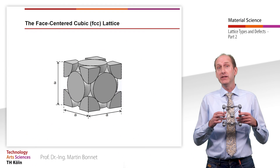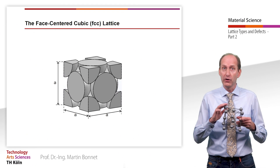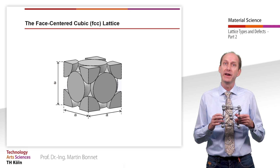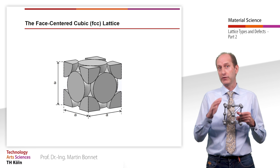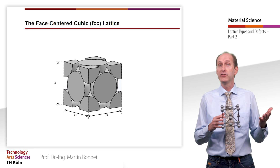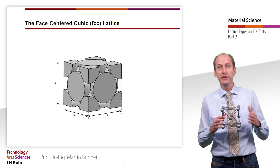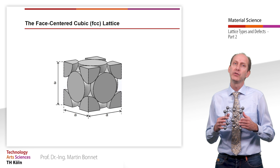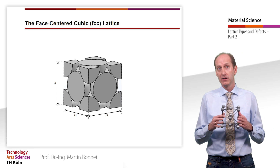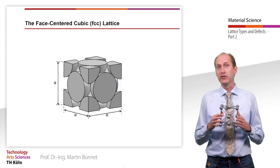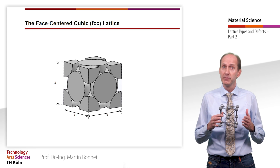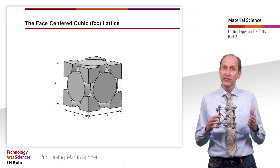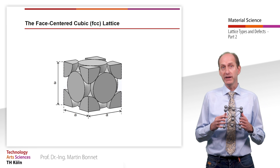In addition to the eight atoms located at the corners of the cube, the face-centered cubic lattice consists of one atom in the center of all six faces of the cube — this is why it is called face-centered. The face-centered cubic lattice is also called a copper type, since copper is a metal with an FCC lattice. Other metals that are solid bodies with FCC lattices are gamma iron, nickel, cobalt, silver and gold.